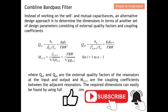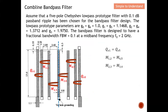If you have learned something, remember to give this video a like and subscribe to this channel. Now let's come to the example. Assume that a five-pole Chebyshev low-pass prototype filter with 0.1 dB passband ripple has been chosen for the band pass filter design. The low-pass prototype parameters are: g0 = g6 = 1, g1 = g5 = 1.1468, g2 = g4 = 1.3712, and g3 = 1.975.